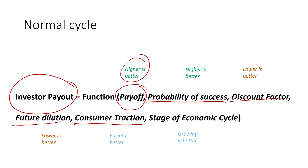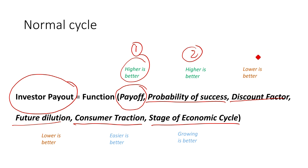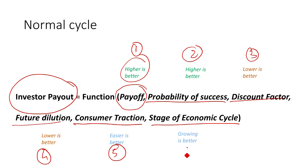One is stage of the economic cycle. So in terms of the math: payoff — higher is better; probability of success — higher is better; discount factor — lower is better; future dilution — lower is better; consumer traction — easier is better; and economic cycle — growing is better. These are the six drivers that determine investor payout in a normal cycle.